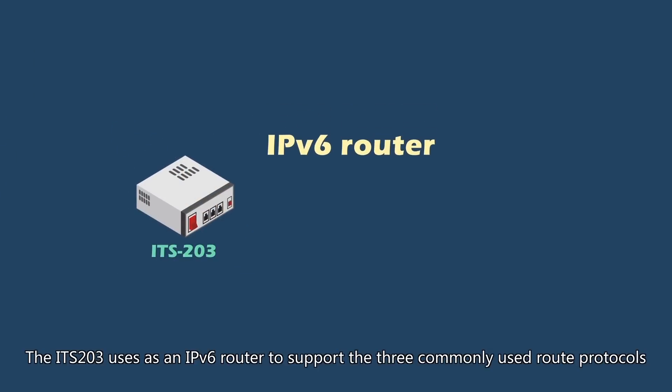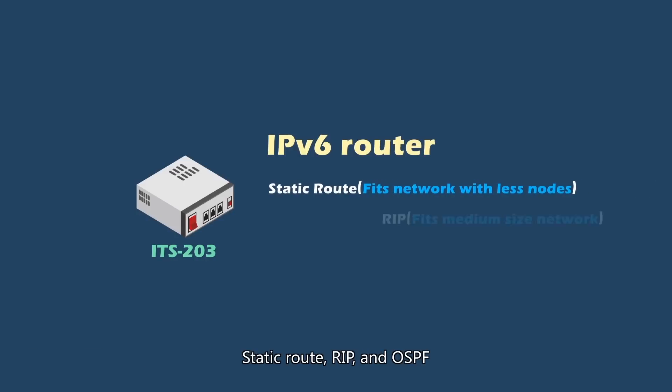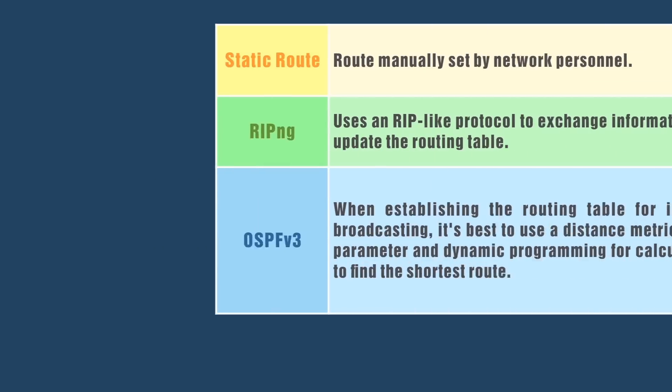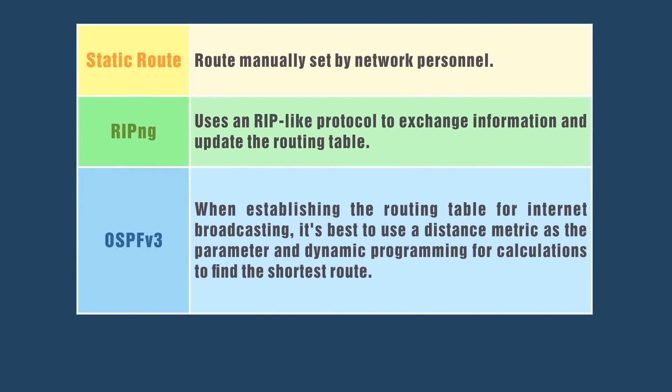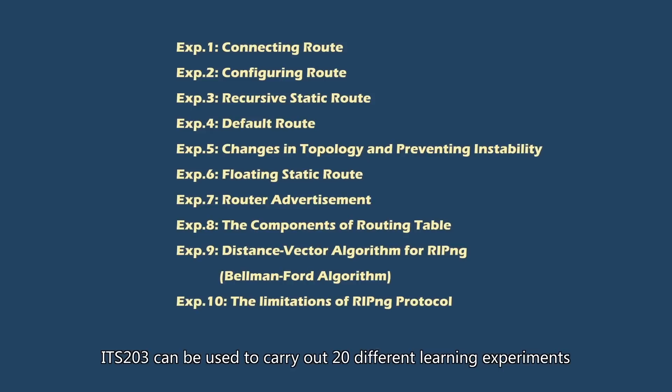The ITS203 uses an IPv6 router to support the three commonly used routing protocols: static route, RIP, and OSPF. ITS203 can be used to carry out 20 different learning experiments.